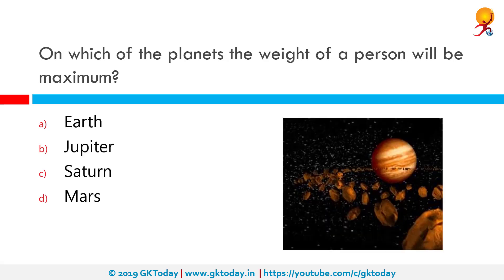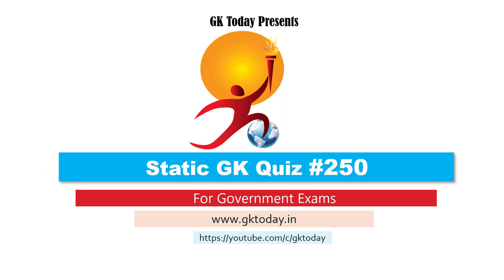On which of the planets will the weight of a person be maximum? The correct answer is Jupiter. 100 kilos on Earth is equivalent to 236.4 kilos on Jupiter. That's all for today's quiz — until the next video, goodbye.